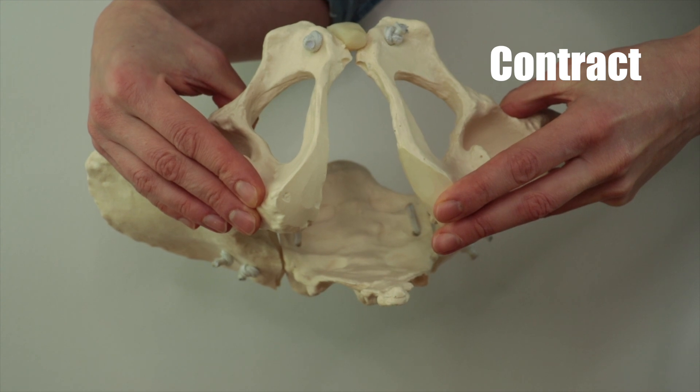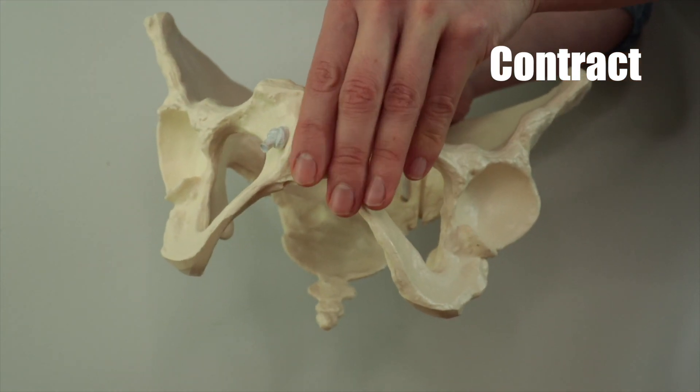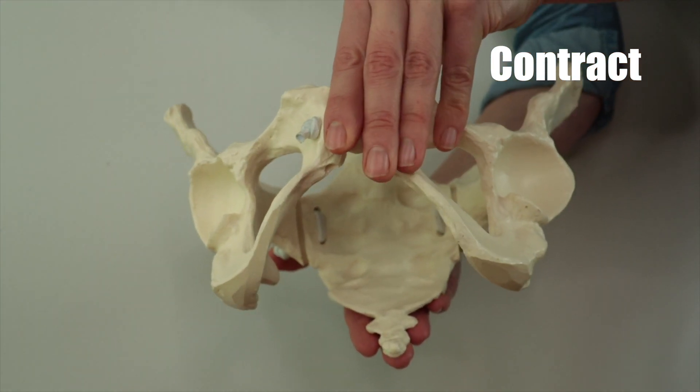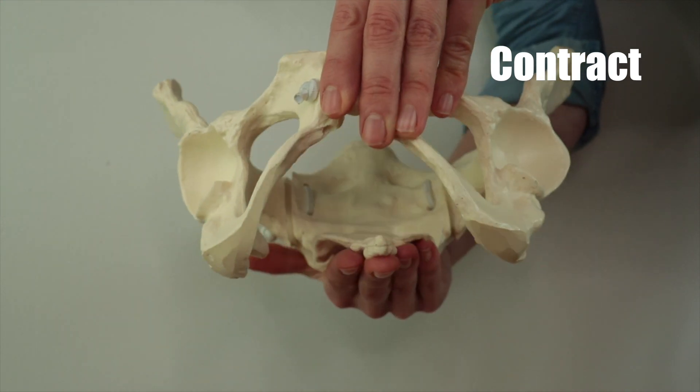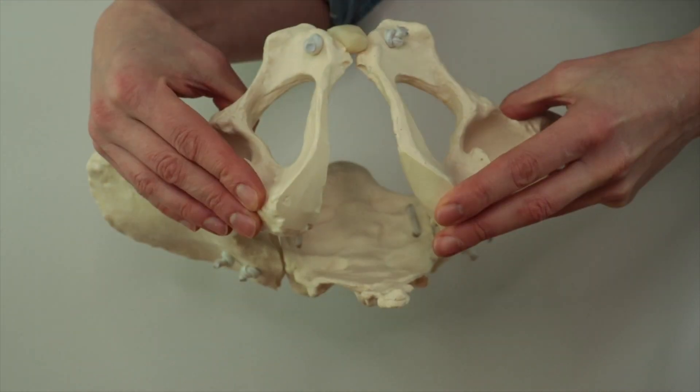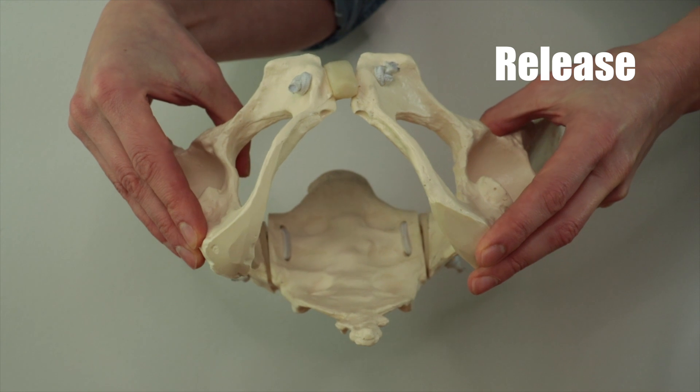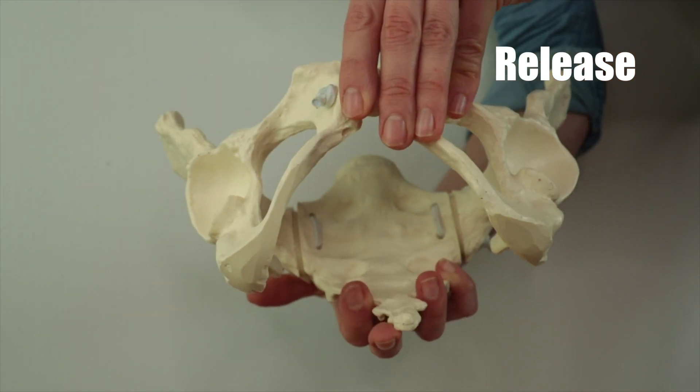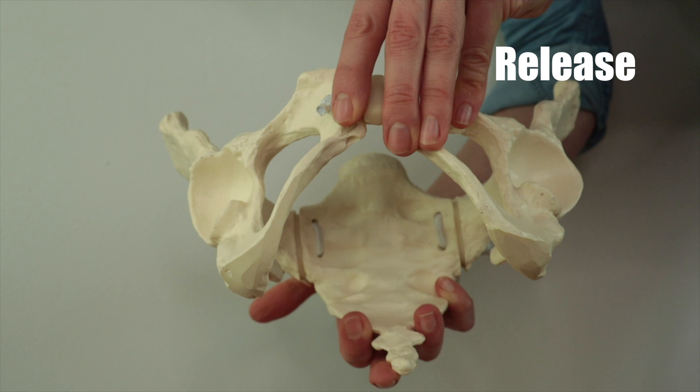You can also picture squeezing your tailbone and your pubic bone together. On the release, imagine letting the sits bones go back to where they were and the tailbone and pubic bone going apart from each other.